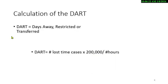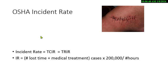We're going to calculate the DART rate — Days Away, Restricted, or Transfer. To calculate it, take the number of lost time cases, multiply by 200,000, and divide by hours worked. The OSHA incident rate — total case incident rate or total recordable incident rate — is the total amount of injuries recorded on the OSHA 300 (lost time and medical treatment, but not first aid), times 200,000, divided by the hours at work.